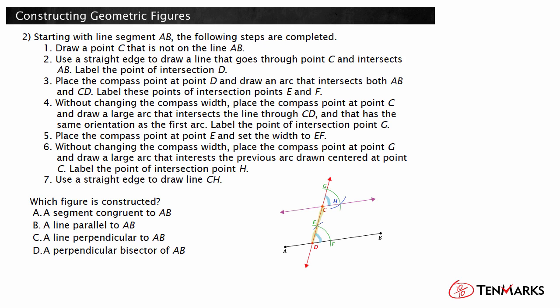Because these two angles are congruent and corresponding, AB is parallel to CH. So, these steps result in the construction of a line parallel to AB. Choice B is correct.